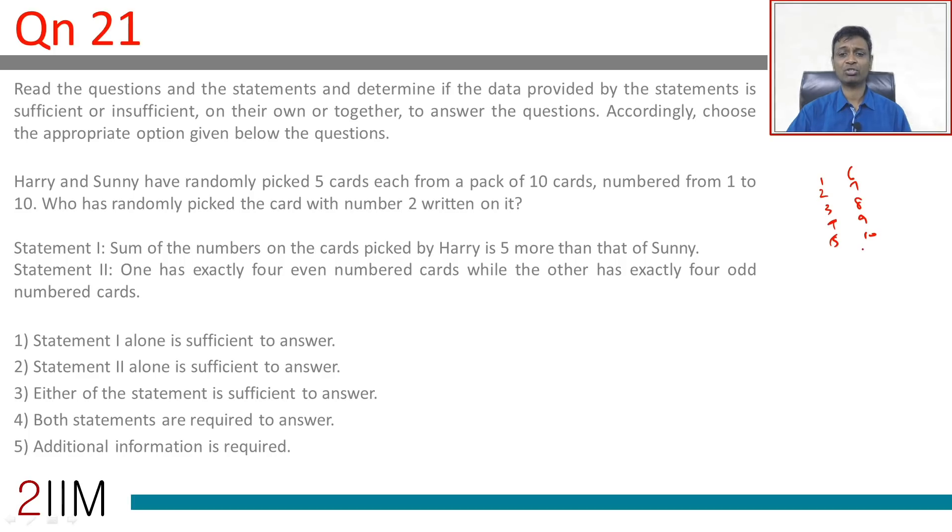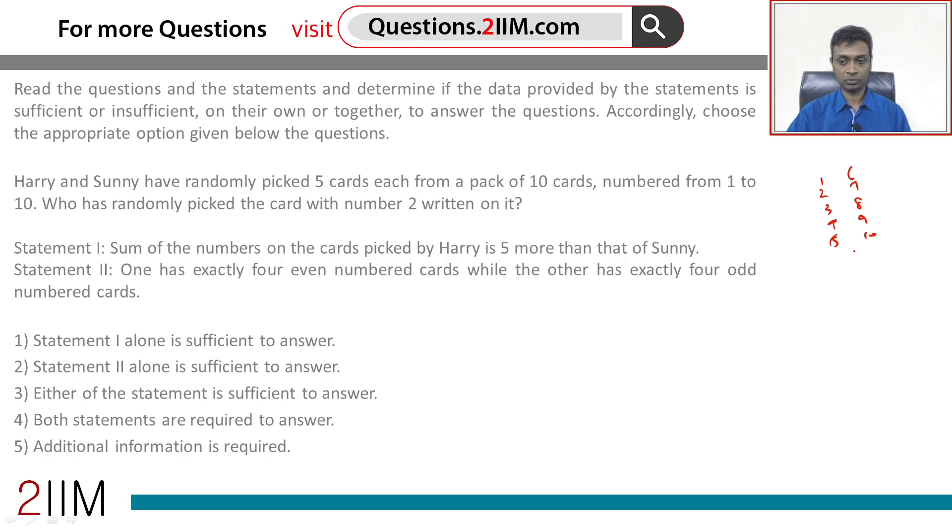Statement one: the sum of the numbers on the cards picked by Harry is five more than that of Sonny. If you add all the totals up, the entire total is 11 into 5, which is 55, or 10 into 11 by 2.